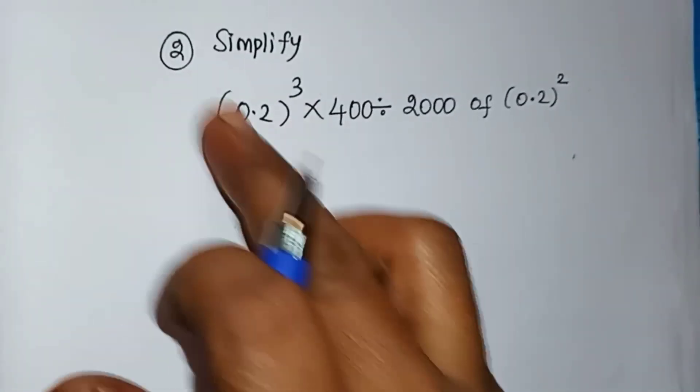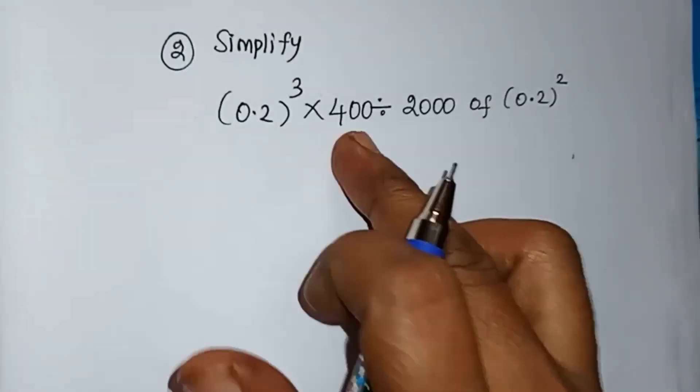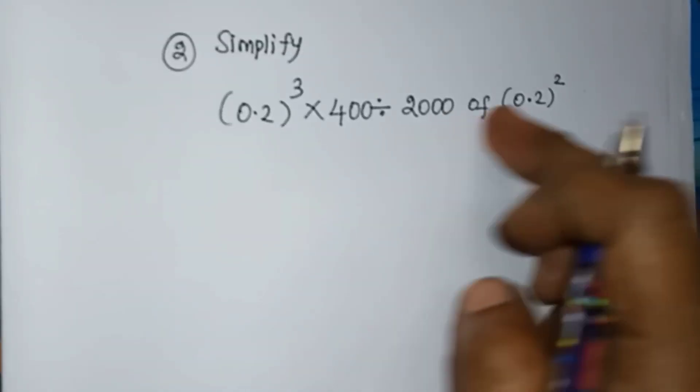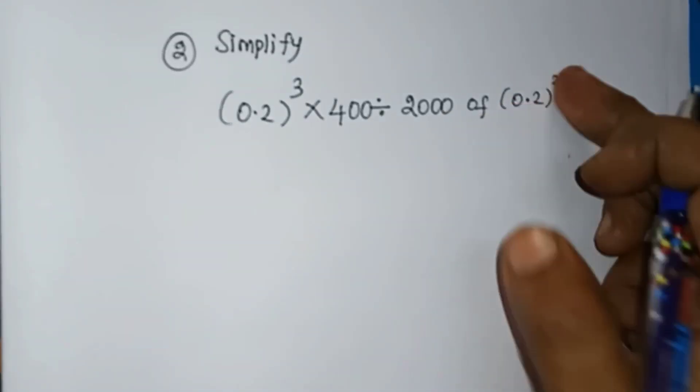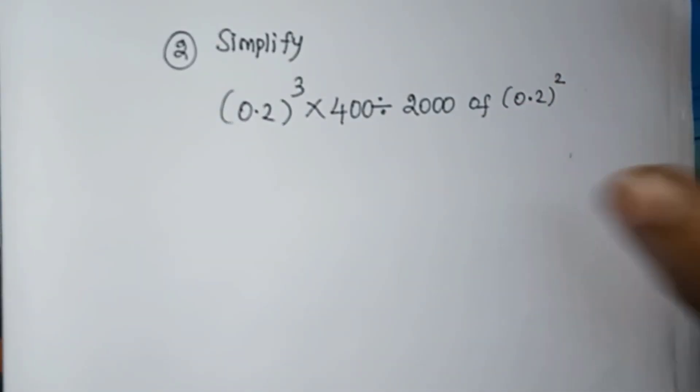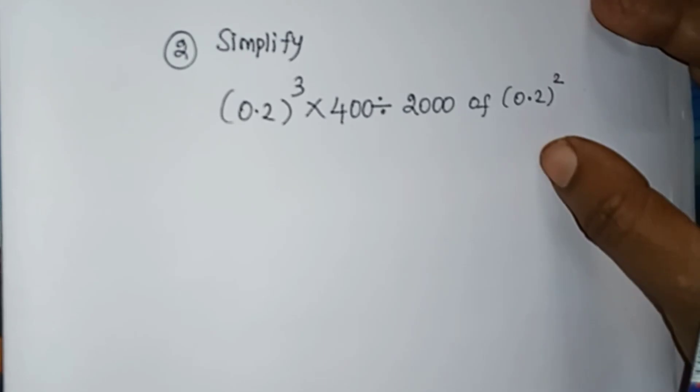Simplify: 0.2 to the power 3, into 400, division 200, 'of' 0.2 to the power 2. If you want to skip this question, the question is very easy.